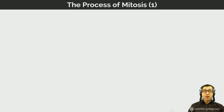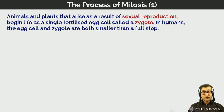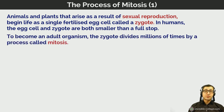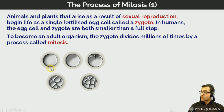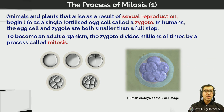Animal and plant cells from sexual reproduction begin life as a single fertilized cell called a zygote. In humans, the egg cell and zygote are smaller than a full stop. To become an adult organism, that zygote must divide millions of times to produce a rapidly dividing ball of cells called an embryo, and eventually a fetus and then the baby — all through the process of mitosis. Here is a photograph of a human embryo at the eight-cell stage.